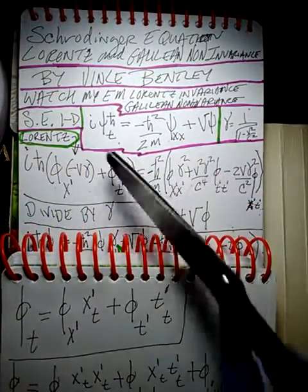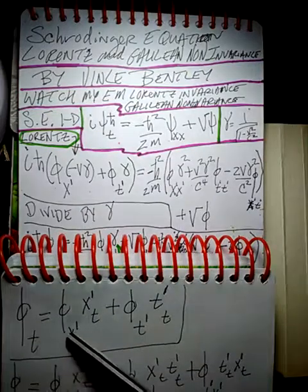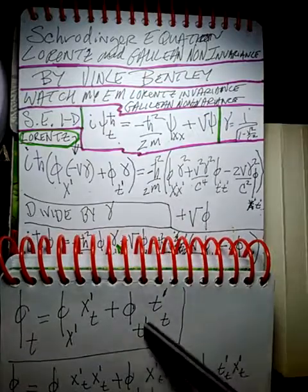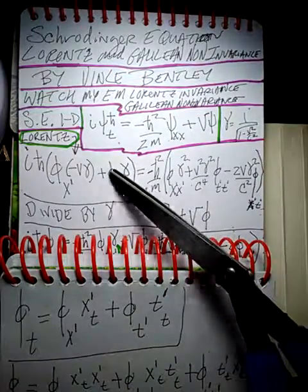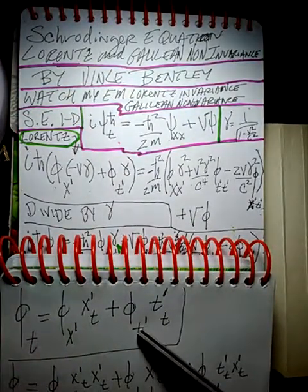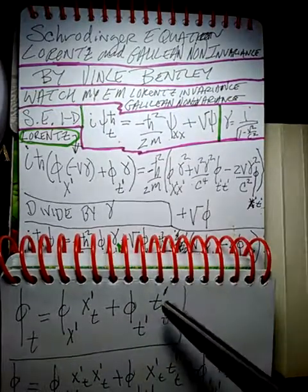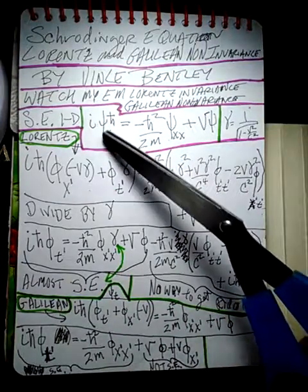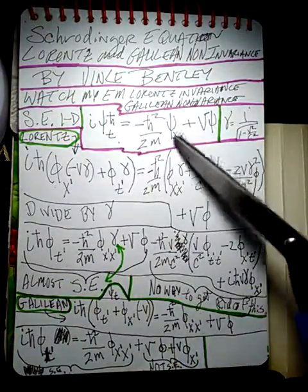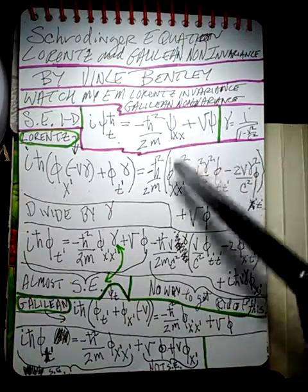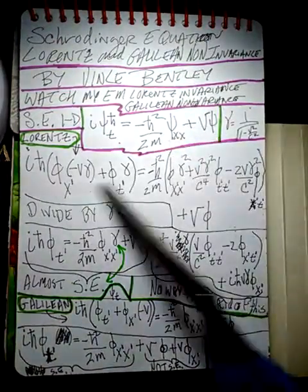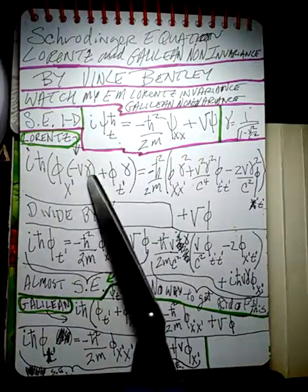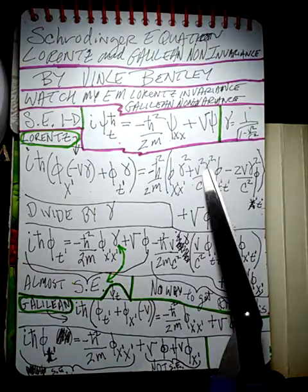So psi_t transforms into phi_{x'} times negative v gamma, plus phi_{t'} times gamma. And the Lorentz-transformed psi_xx becomes all of that expression with gamma squared terms. Everything else stays the same. We can now divide by gamma: there's a gamma, gamma, gamma squared, gamma squared — so we divide through by gamma.